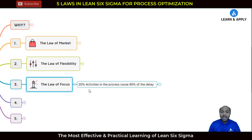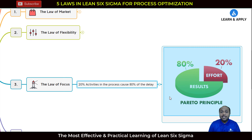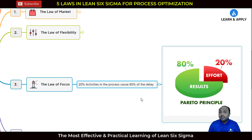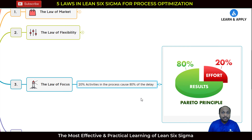20% of the activities in the process cause 80% of the delays — this is dealing with the Pareto principle. This law indicates that we need to identify what are these 20% of the activities which are contributing to 80% of the waste, and we need to take the initiatives to reduce them.